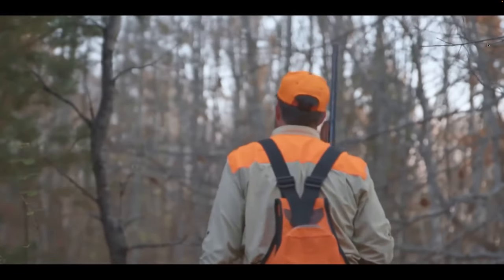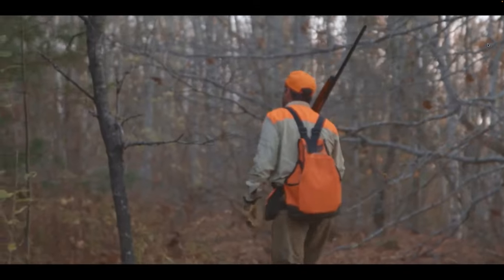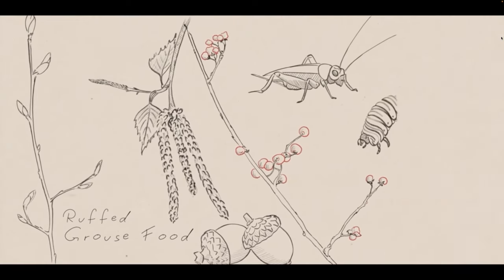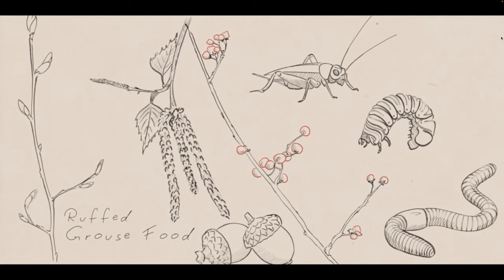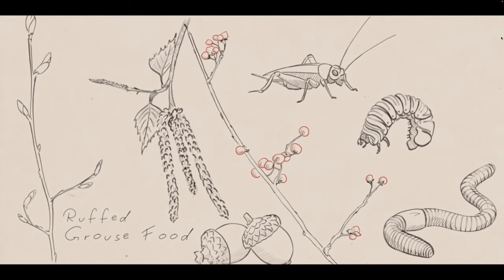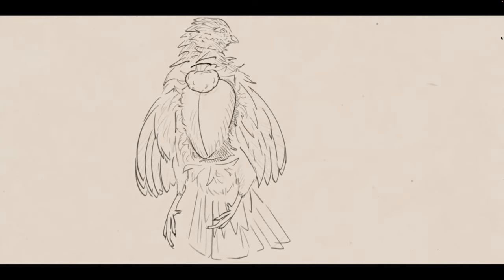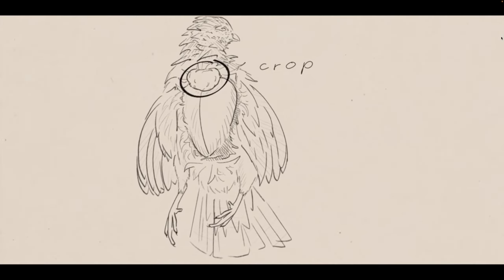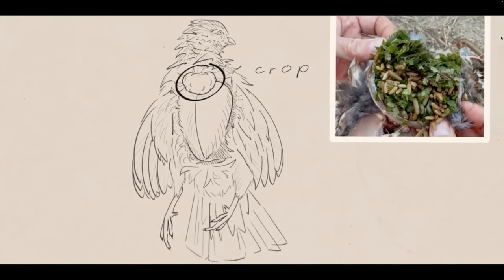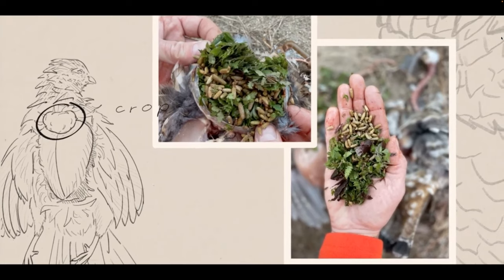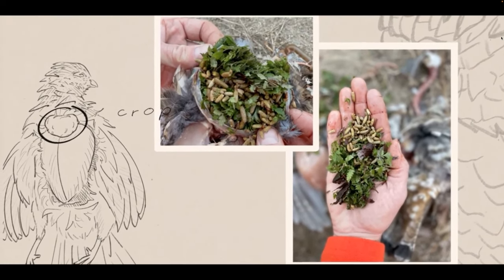Ruffed grouse hold tight and often won't flush until you've nearly stepped on them. At that point, the thunder of wings is definitely going to set your heart racing the first time you hear it — and probably many more times on future hunts. Ruffed grouse mostly consume vegetation such as leaves, buds, and berries, though they also eat insects and invertebrates, which make up a small part of their diet. Young grouse will eat mostly insects and invertebrates as they're rich in much-needed protein. Most birds including the ruffed grouse have a crop — basically a pouch where food is stored before it is fully digested.